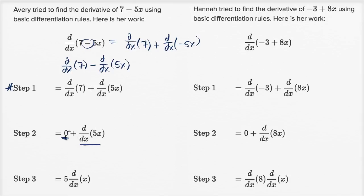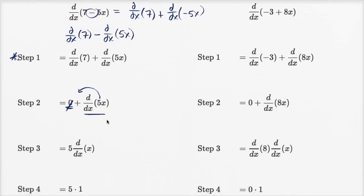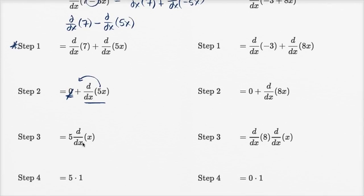Let's see what she does here. That zero disappears, and now she takes the constant out. That's true - the derivative of a constant times something is equal to the constant times the derivative of that something. Then she finds that the derivative with respect to x of x is 1, and that's true.